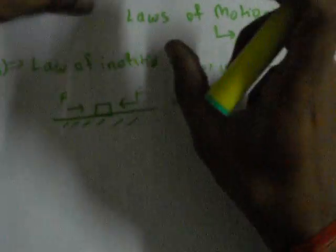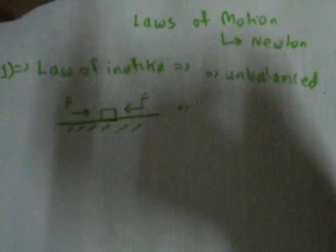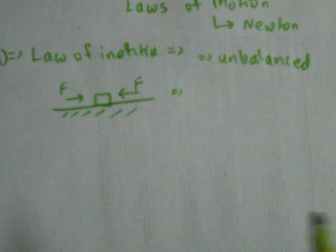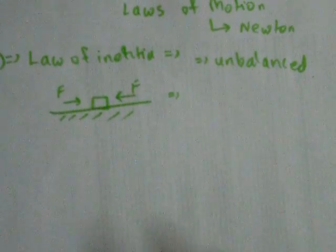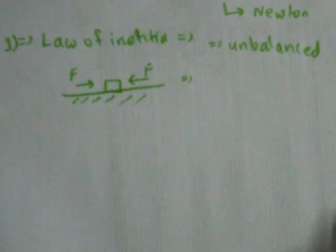This law of inertia is of three types. Basically, it has three sub-laws, which are inertia of rest, inertia of motion, and inertia of direction. Inertia of rest and motion, as their name suggests, is due to their rest and motion. Inertia of direction is the tendency of an object to move in a particular direction unless and until an unbalanced force is applied.